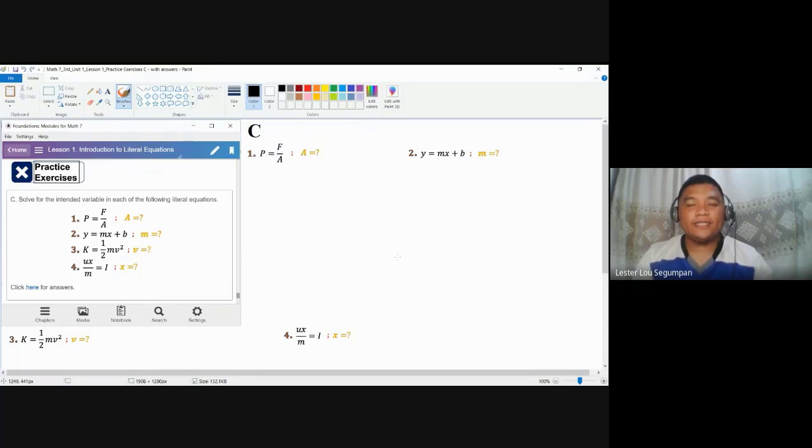Hello. This is the last practice exercise for lesson number one, which is concerned with solving literal equations. For items here in practice exercise C, we are going to include many different processes to come up with our intended variable, applying concepts from practice exercise A and B and other properties of equality.